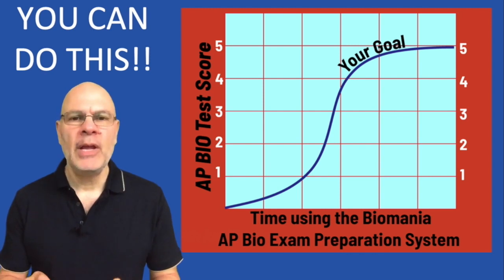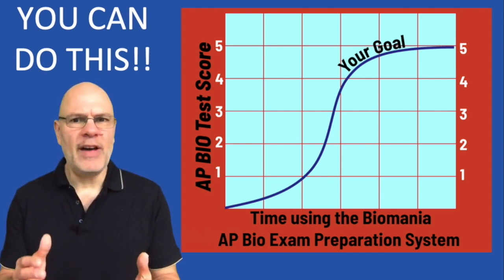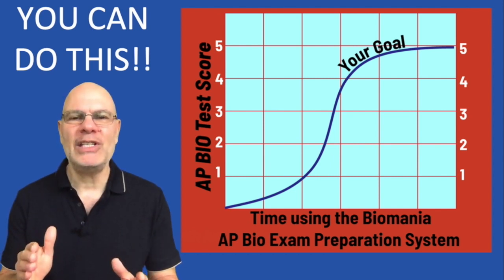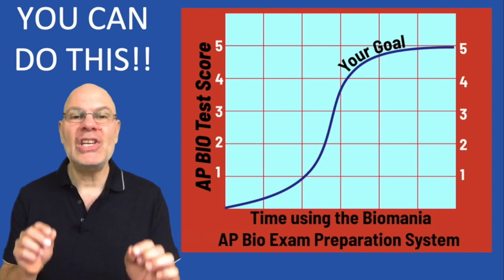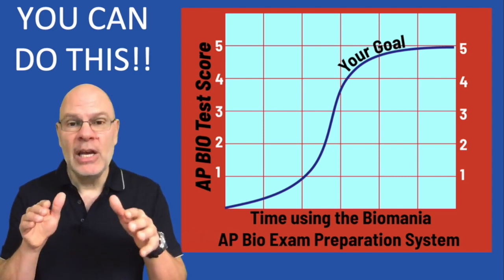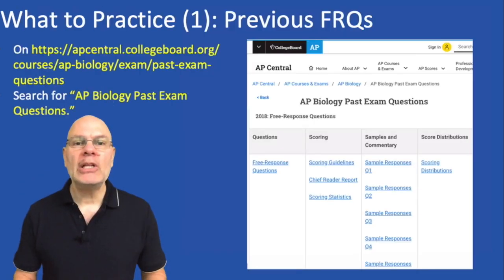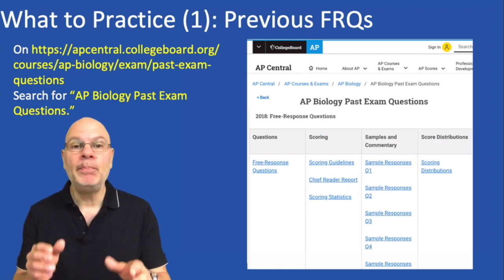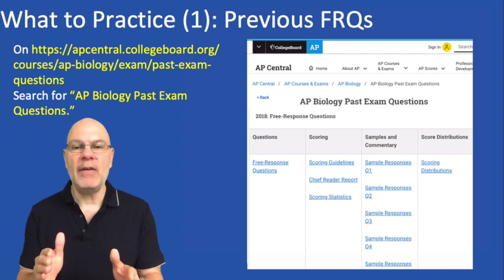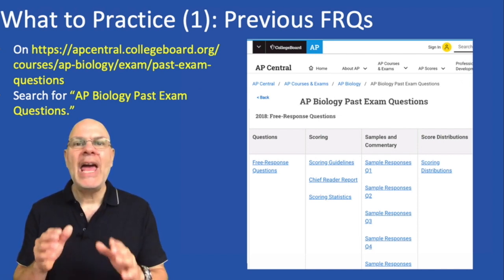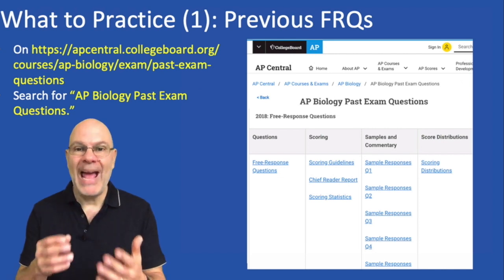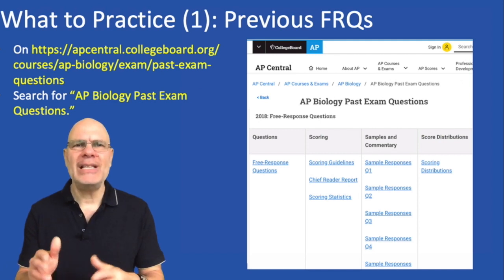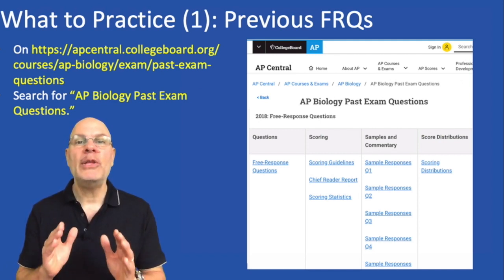You can do this. I know it seems daunting — 45 minutes isn't a lot of time and there's no multiple choice — but you can totally get ready for this. All you have to do is practice in the right way and devote the requisite time. The best stuff to practice is material provided by the College Board itself on their AP Central website, which has past FRQs and scoring guides going back from last year, 2019, all the way to 2012.